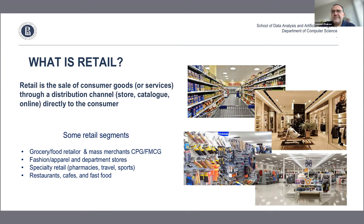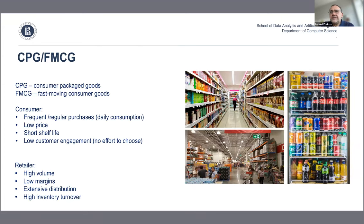CPG and FMCG are of particular interest for data science. These are retail segments with very high volume and quick turnaround — a lot of consumers, a lot of purchases, products with quite short shelf life, typically low prices and lower margins. In this case you really can benefit from all kinds of analytics and predictive analytics.